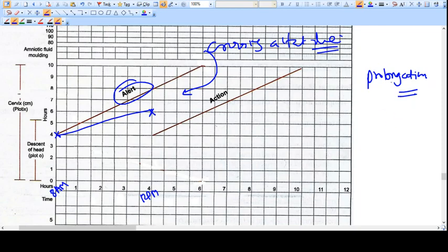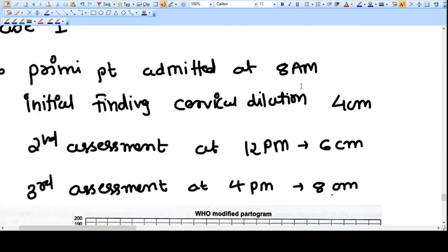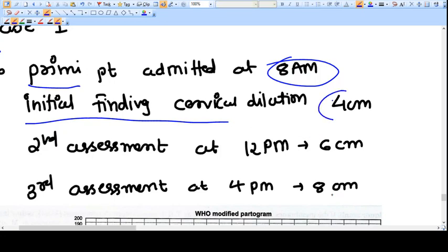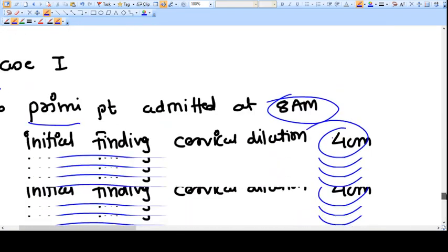Now the third case scenario: the primpara patient admitted at 8 AM. Initial finding was 4 centimeters. You have to assess after 4 hours every time. So after 4 hours you have assessed at 12 PM, it is 6 centimeters.